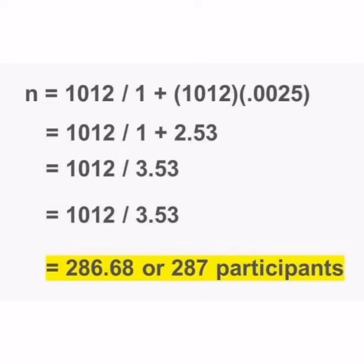In the previous video, you learned about determining the sample size in a quantitative study using the Slovin's formula. In our example, we used the population of the whole junior high school department and, using a 5% margin of error, we figured out that there should be more or less 287 students participating in the study.